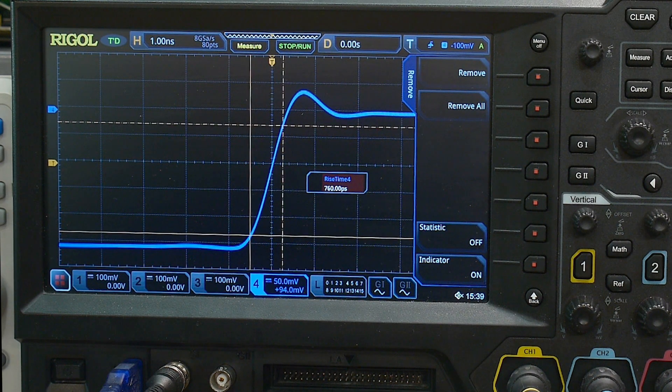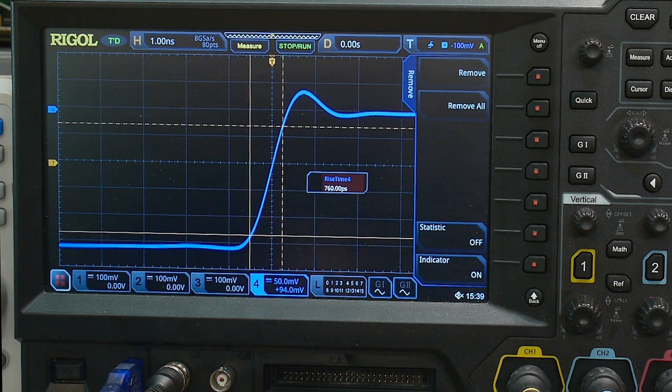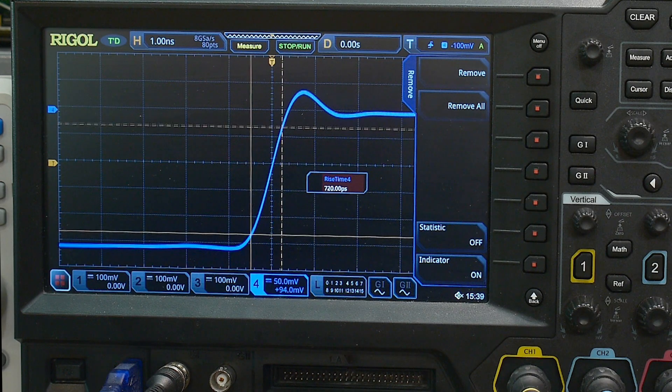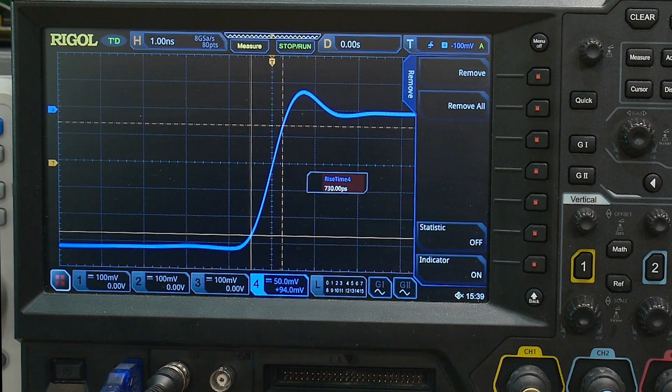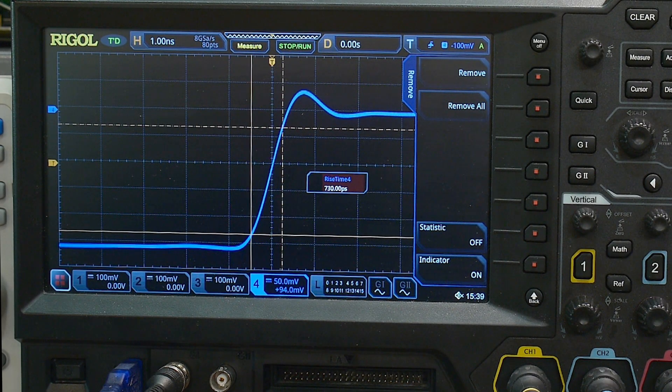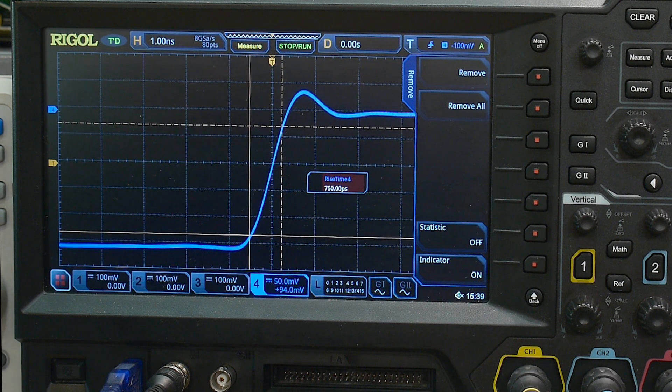Now it says that it's a 200 picosecond rise time, so we're now looking at something where the bandwidth of the oscilloscope is slower than the actual edge itself. This is as fast as the oscilloscope can go. This is a good way to test the speed of your oscilloscope.